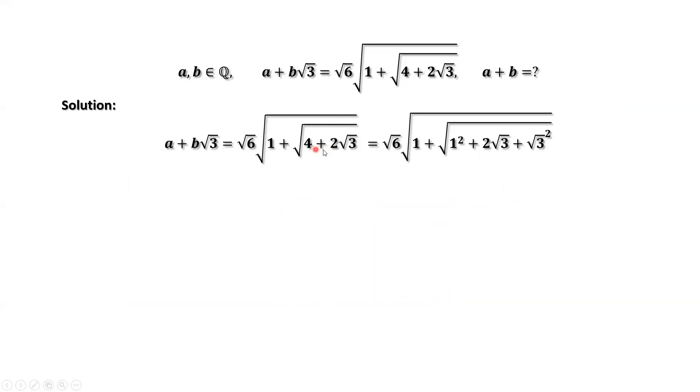We rewrite 4 plus 2√3 as 1² plus 2√3 plus (√3)². What is this part? This is a complete square: (1 + √3)².